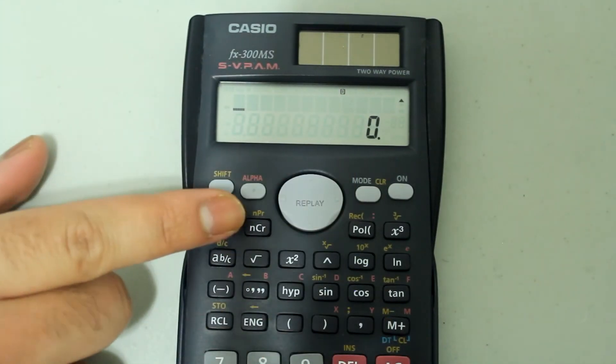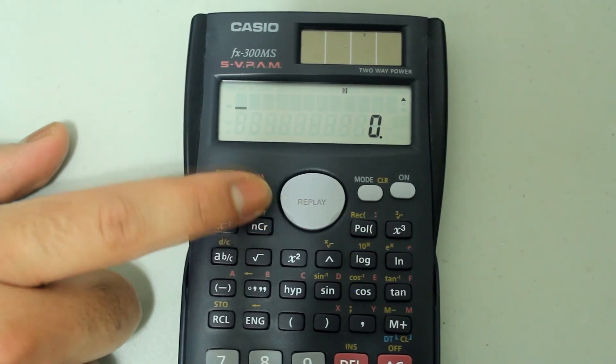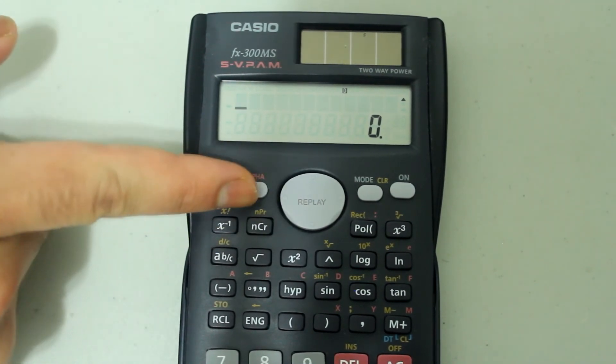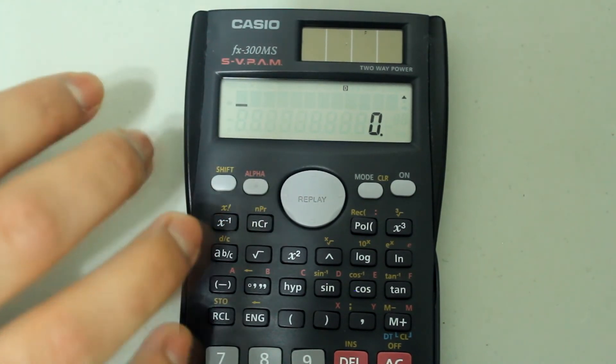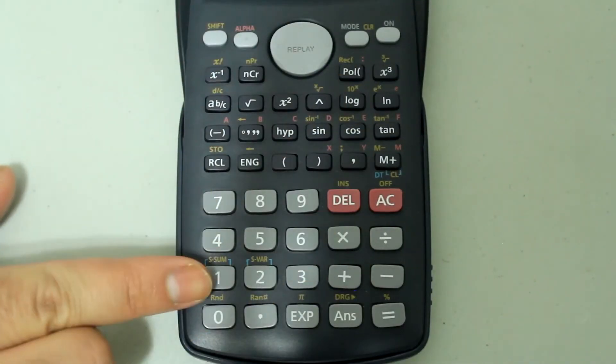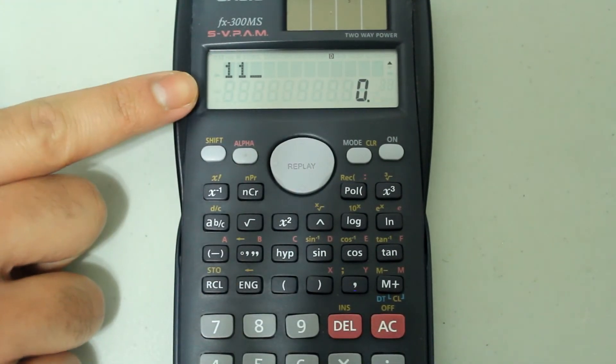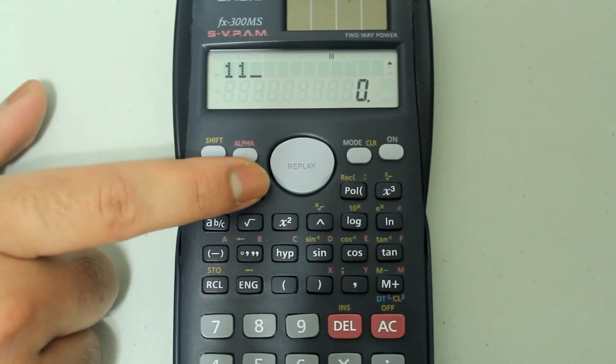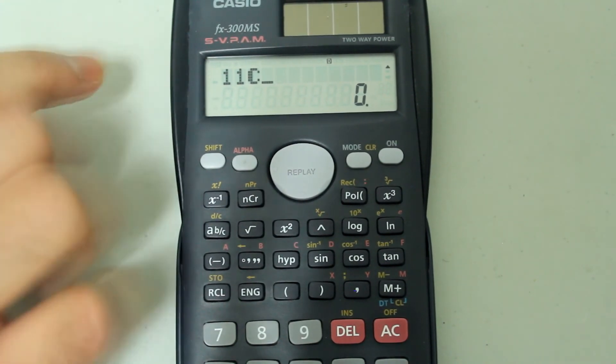So just as before, we're going to have the n on the left and the r on the right. The only difference is we're not going to use the nPr. We're going to use the nCr button for combination. So we'll type in the n value first. That's 11. This is what it looks like. The n value is typed in. Press the nCr button and the calculator screen looks like this.